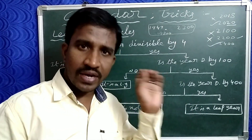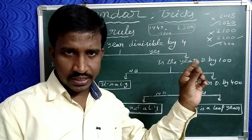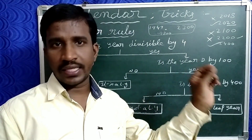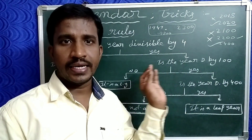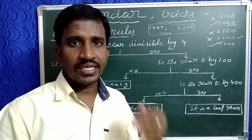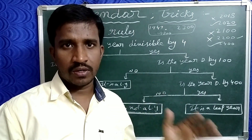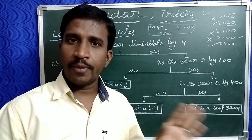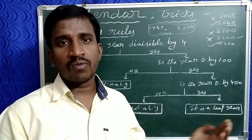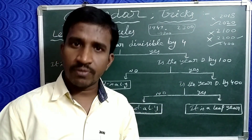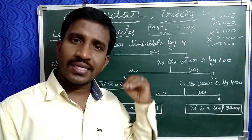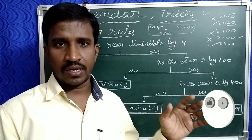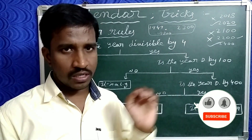Simply, for the given year: if the last two digits are divisible by 4, it is a leap year — otherwise not. But if it is a multiple of 100, then check if it is divisible by 400. If divisible by 400, it is a leap year; otherwise it is not a leap year.